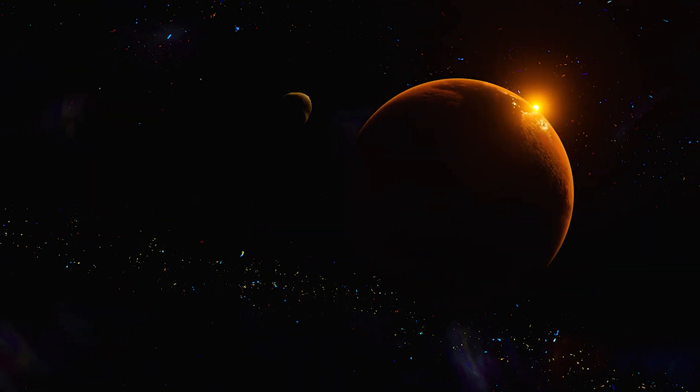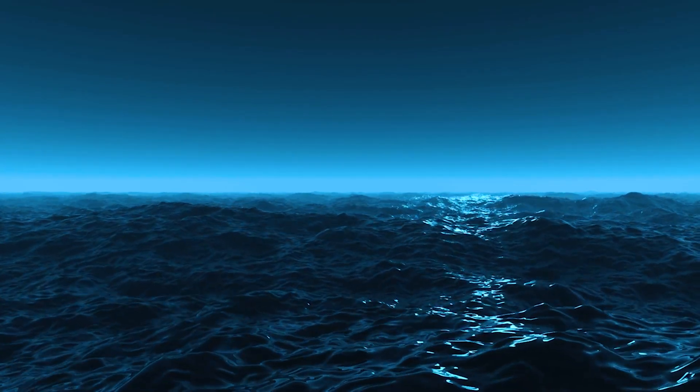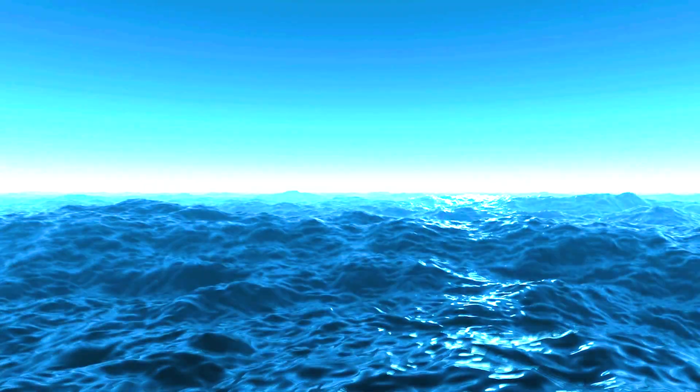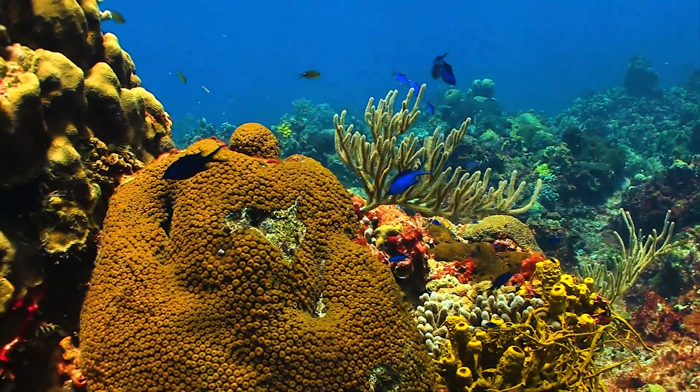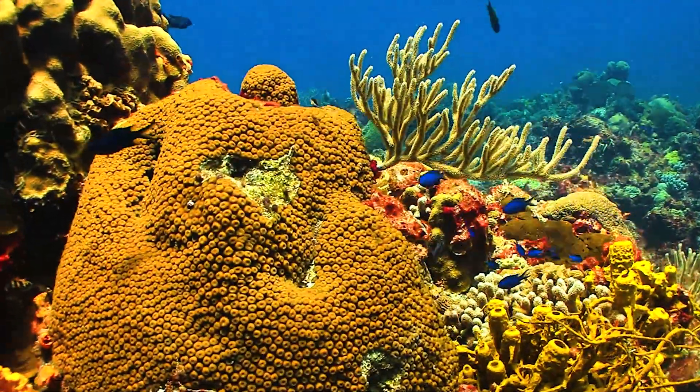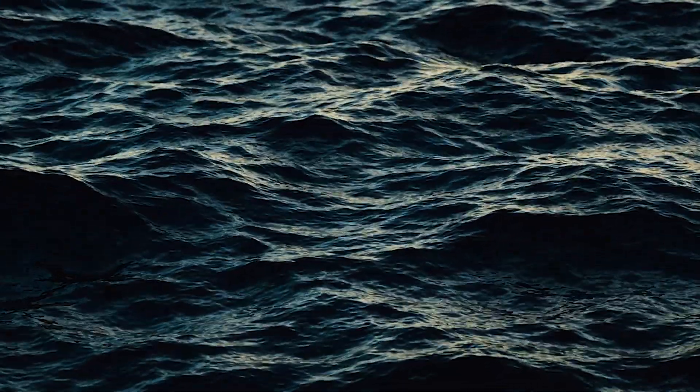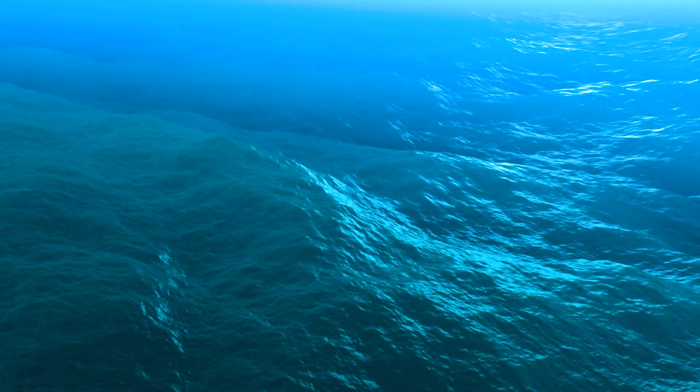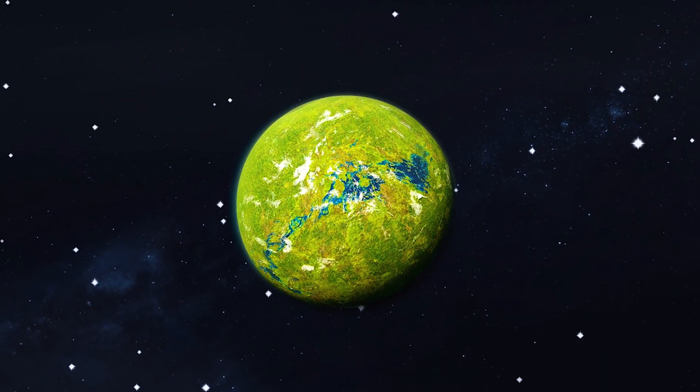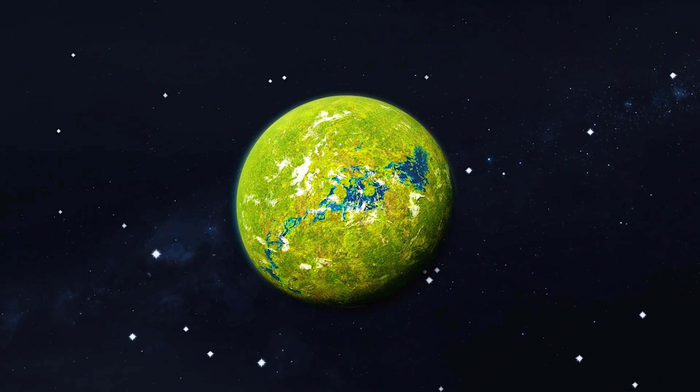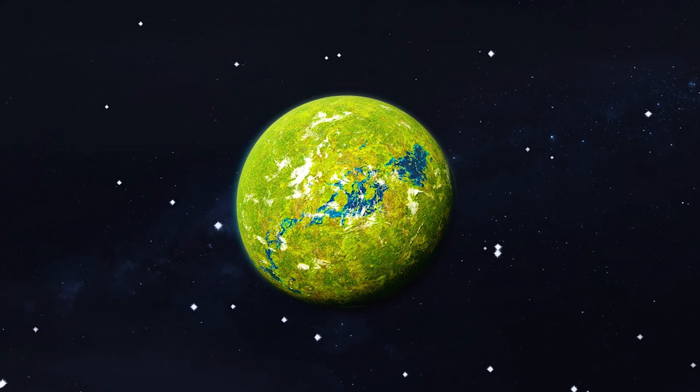Scientists have concluded that the planet's distance from its star suggests that water will be present in large quantities, which is essential for the emergence of life. It is worth noting that life on Earth began in the ocean, and water is critical for sustaining life on other planets as well. Therefore, the presence of a vast ocean on KOI 5715.01 makes it an intriguing candidate for further study.